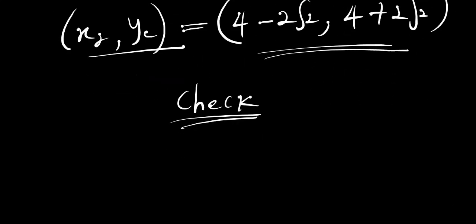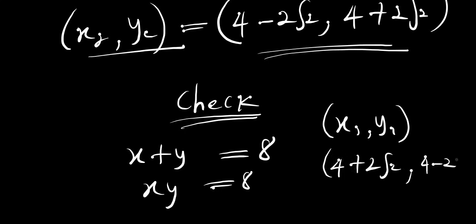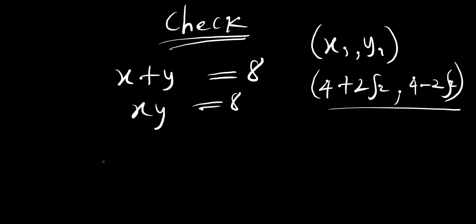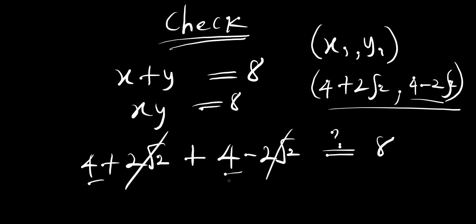We had x plus y equals 8, and x times y equals 8. Using x1 equals 4 plus 2 root 2 and y1 equals 4 minus 2 root 2: for x plus y, we have (4 plus 2 root 2) plus (4 minus 2 root 2). The 2 root 2 terms cancel, and we have 4 plus 4, which equals 8. That's correct.